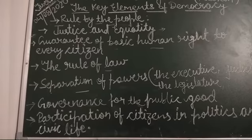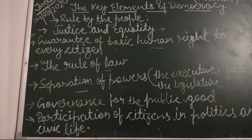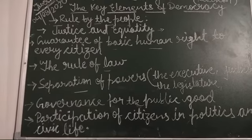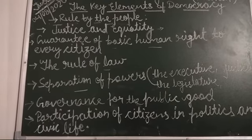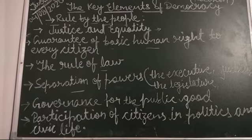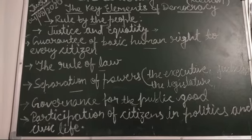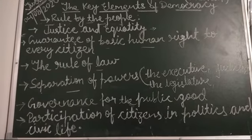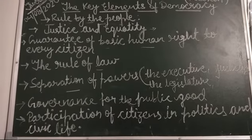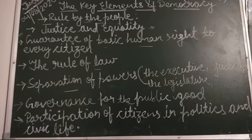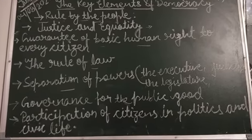The next element is the rule of law — that no one may be arrested or imprisoned without adequate reason. Torture or ill treatment of prisoners is forbidden. This is what is known as the rule of law.